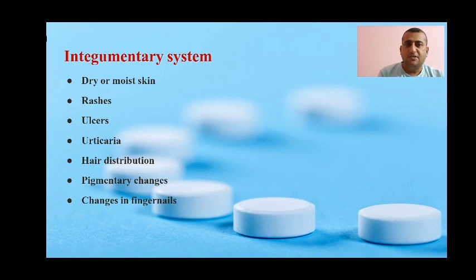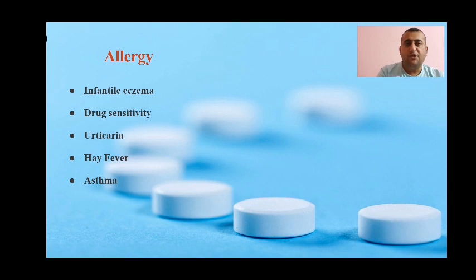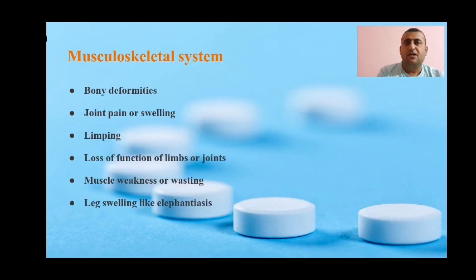In integumentary system review, elicit history of dry or moist skin, rashes, ulcers, urticaria, hair distribution, pigmentary changes, and changes in fingernails. For allergy, ask about infantile eczema, drug sensitivity, urticaria, hay fever, and asthma. In musculoskeletal system review, ask about bony deformity, joint pain or swelling, limping, loss of function of limbs or joints, muscle weakness or wasting, and leg swellings such as in elephantiasis.